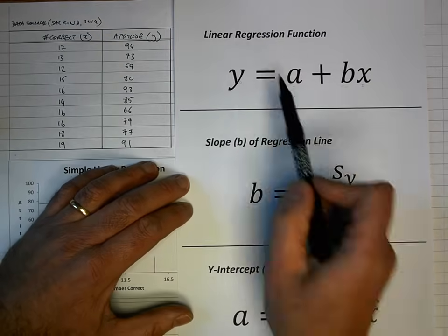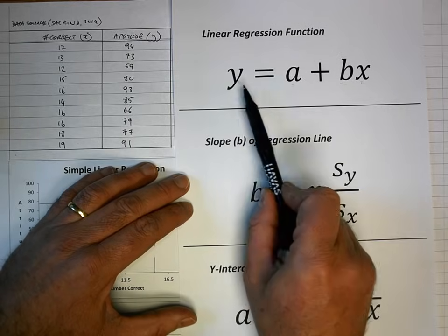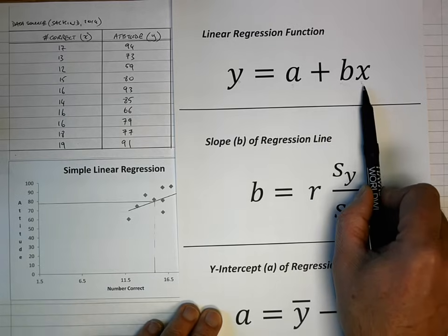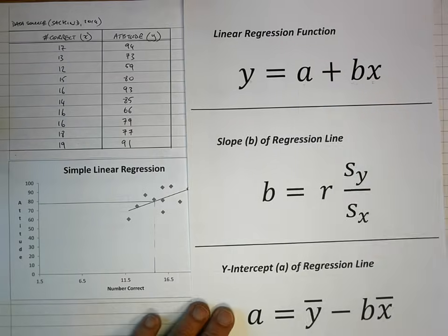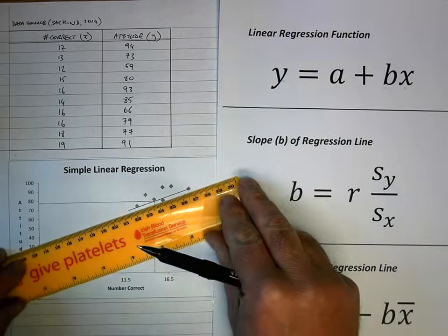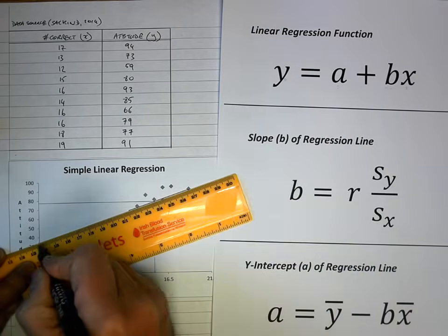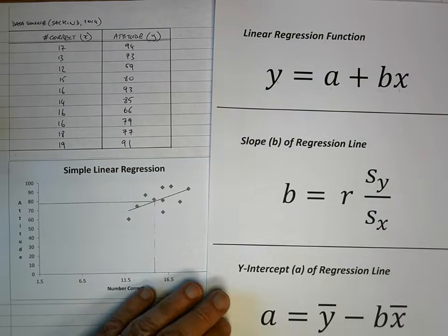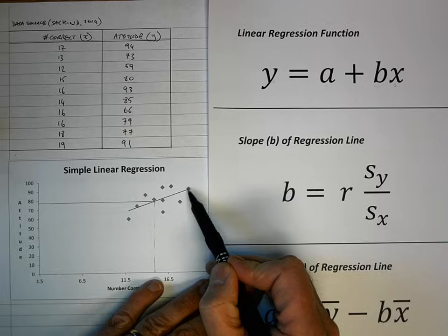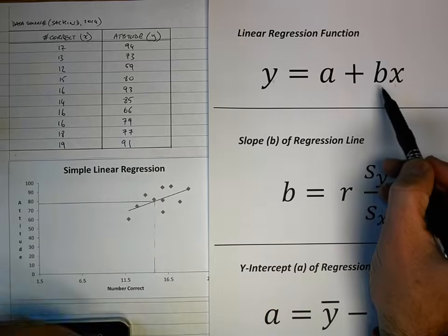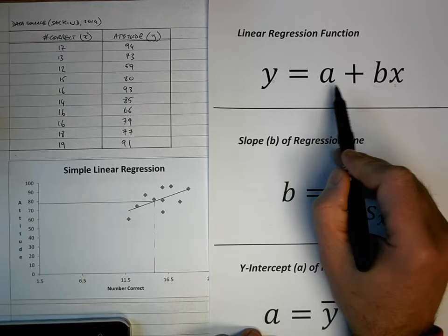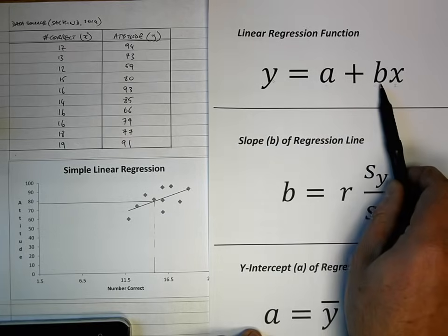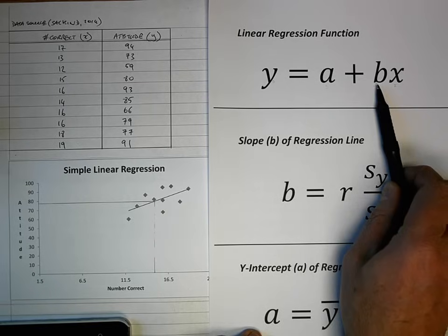These are the formulas that I'm going to use. My linear regression function is y, which is my dependent variable, equal to a, which is the y-intercept, plus b, which is the slope, times x, which is my independent variable. If I know the y-intercept — where the regression line would cross the y-axis — and the slope, represented by the letter B, then using a given value of x I can predict a value of y. So there are two pieces I need: the slope of the line and the y-intercept.